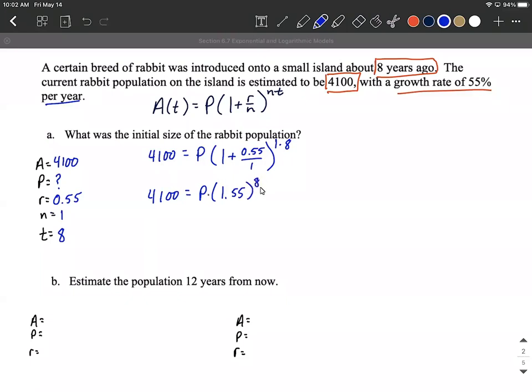So to get P by itself, P is connected with multiplication to everything else on the side of the equation. So to get P all by itself, we'll divide by 1.55 raised to the 8th power. Even if this was something more complicated in here, hopefully we can put all of this into our calculator at the same time. So 4100 divided by all of this.